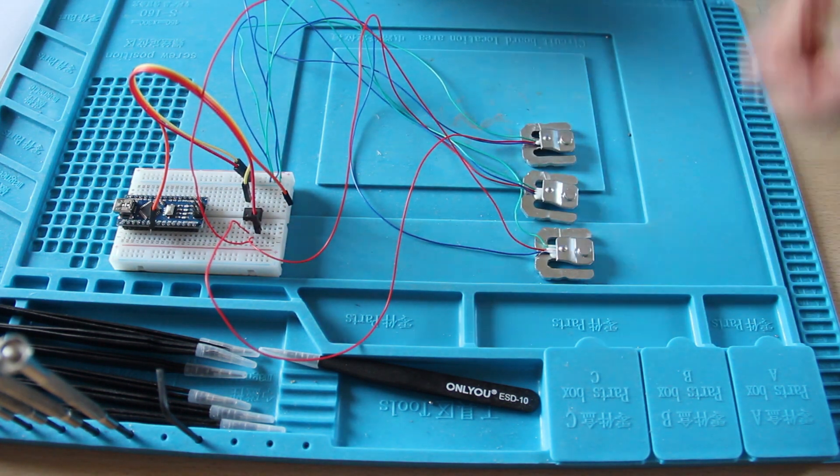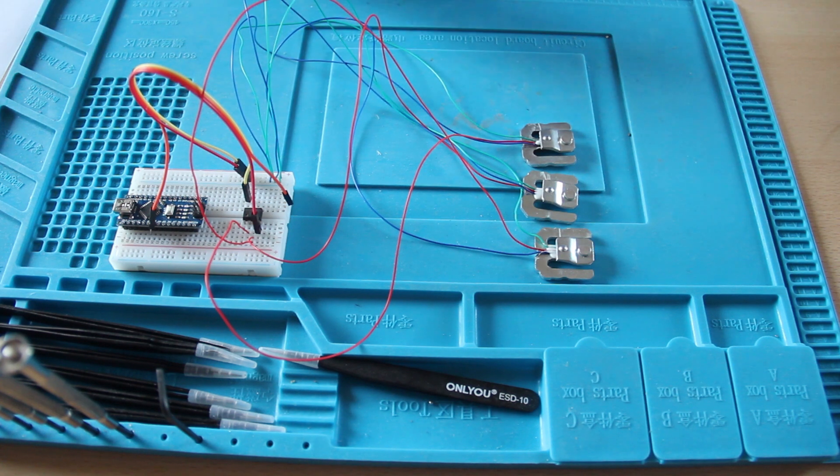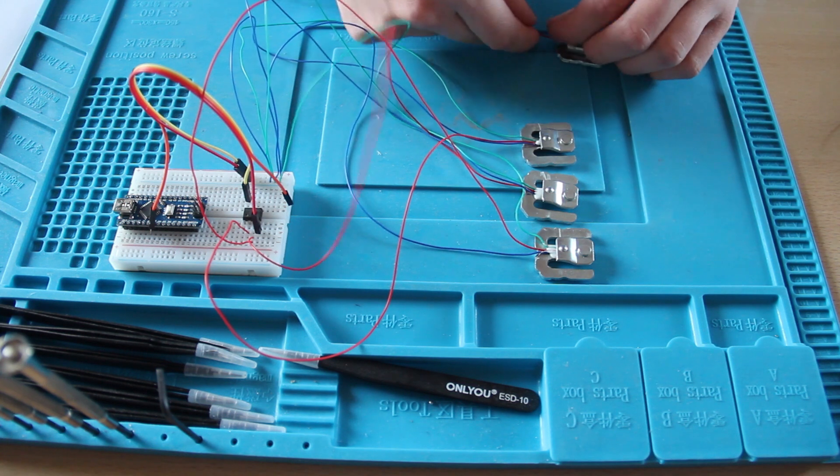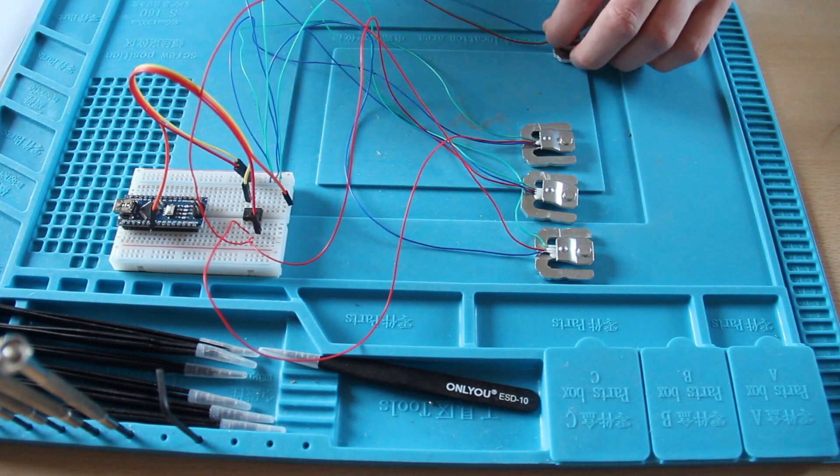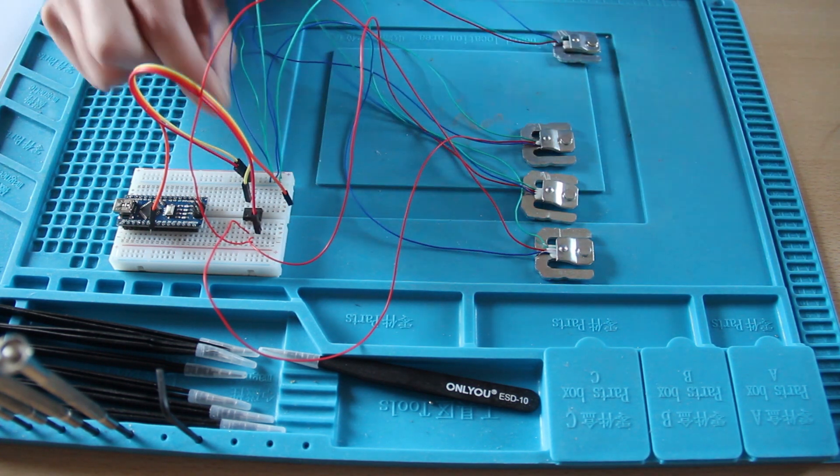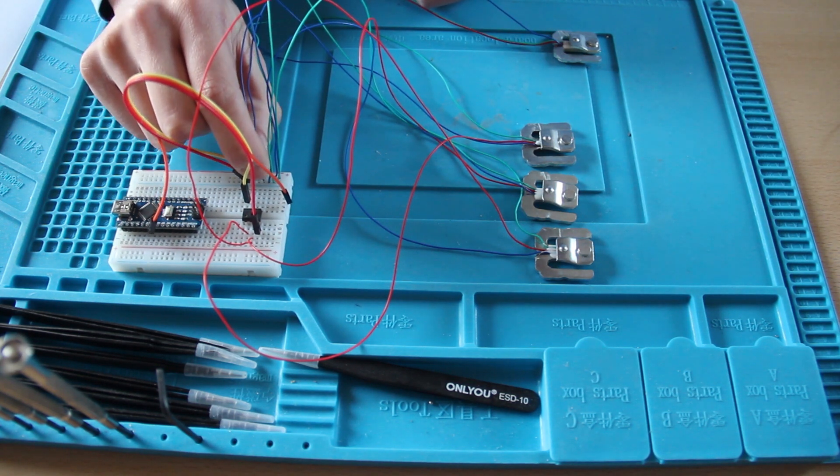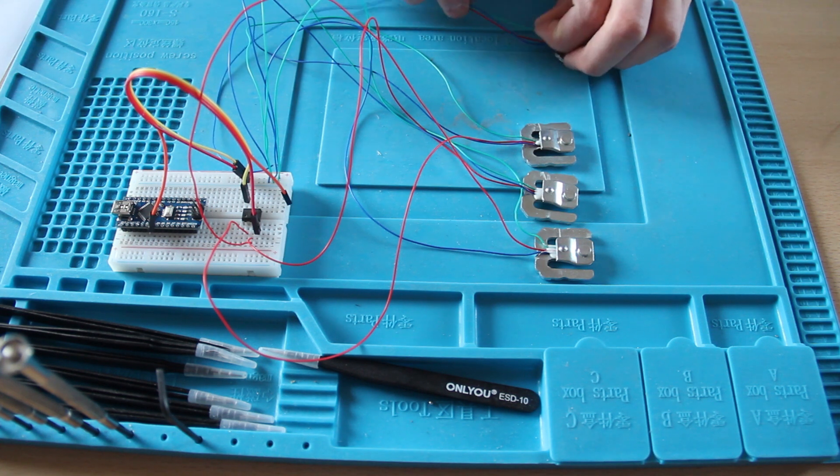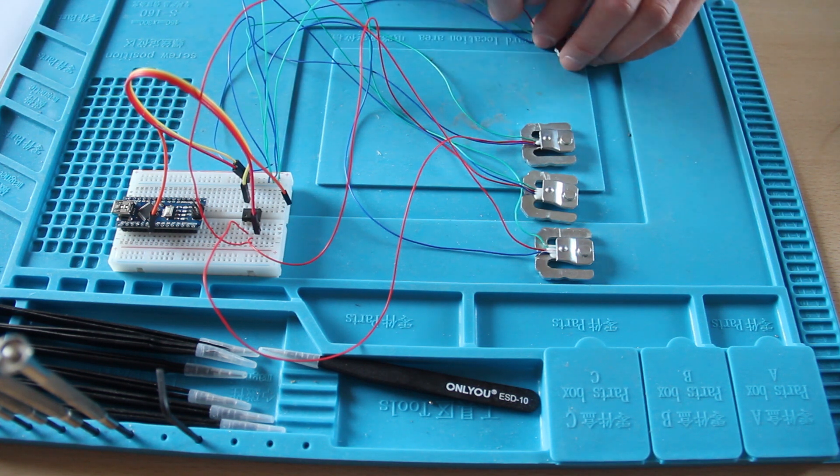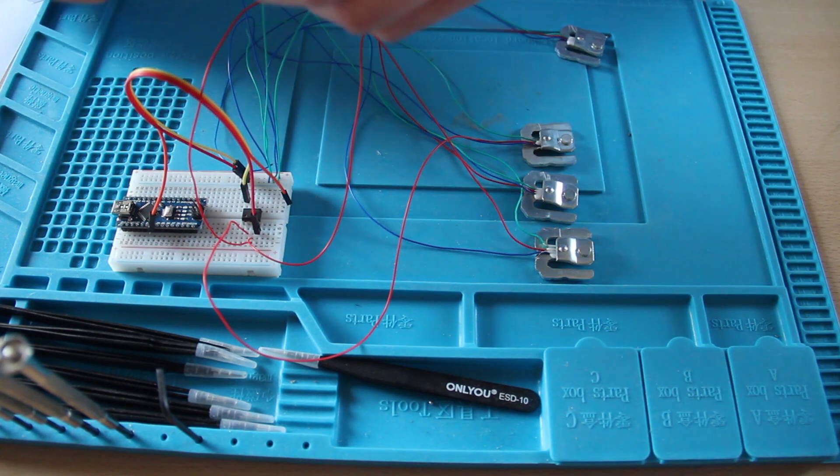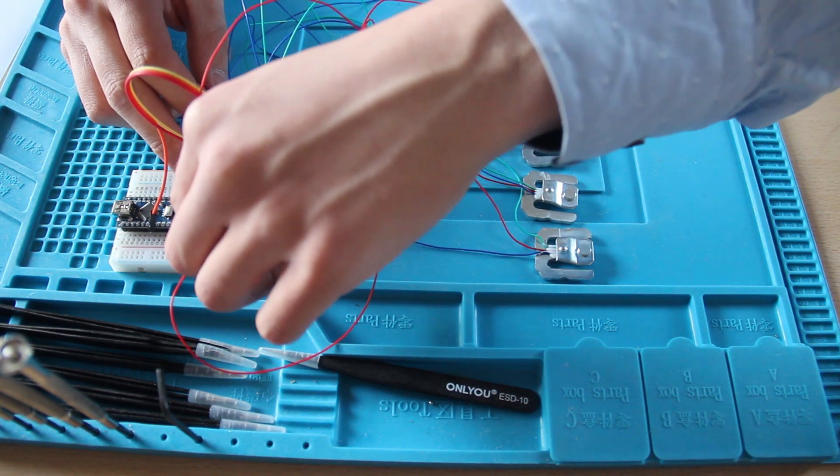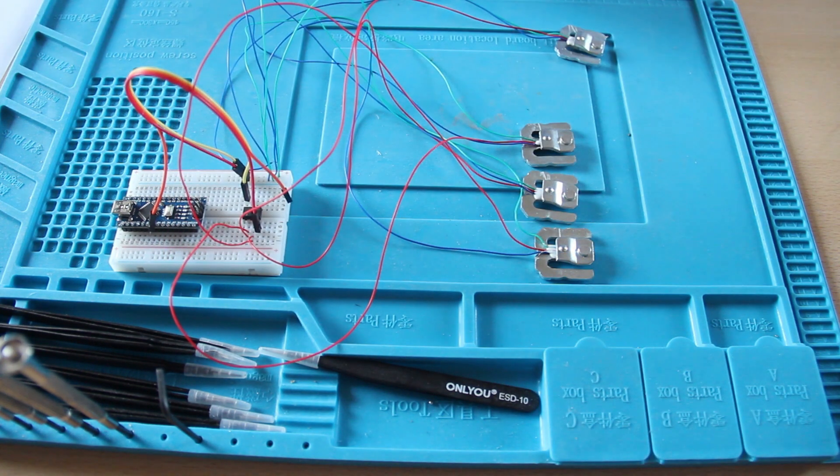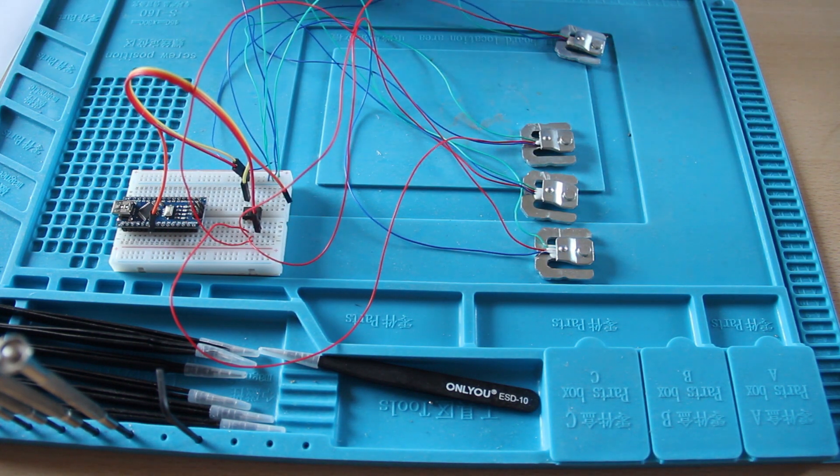So, now for the last load cell. The same connection procedures apply. So blue to ground. Red, let me get the red wire, red to in minus.